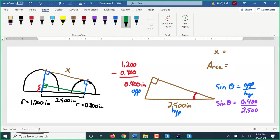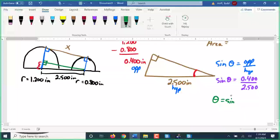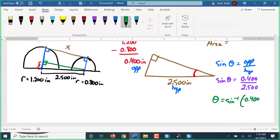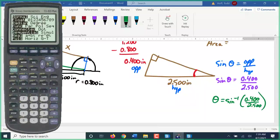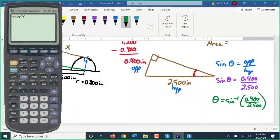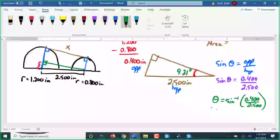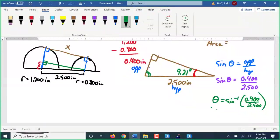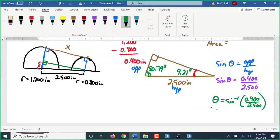How do I solve this for the angle? Inverse sine of 0.4 divided by 2.5 gives us 9.21 degrees. Of course, that means this angle over here is 80.79 degrees, because the triangle has to add up to 180.